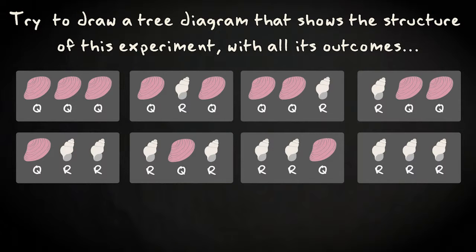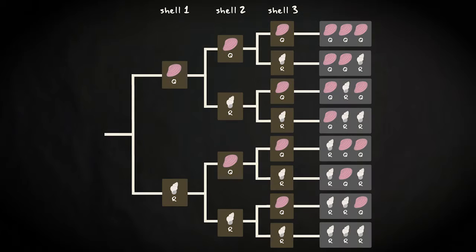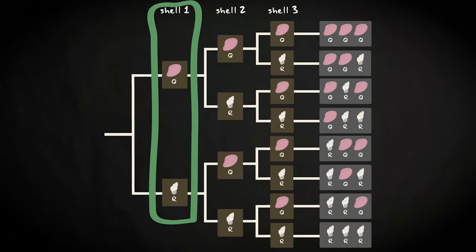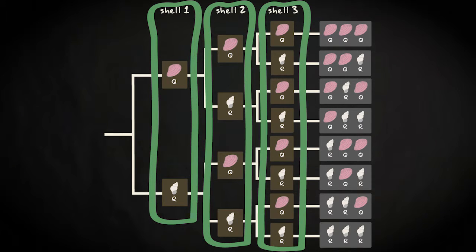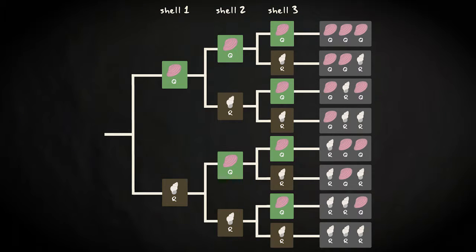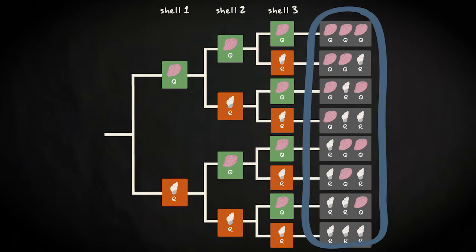Try to draw a tree diagram that shows the structure of this experiment with all its outcomes. Your tree diagram for the entire experiment should resemble this one. You have three levels of nodes — the first, the second and the third time you pick up a shell. At each node, you have one branch which represents picking up a Q shell and one for an R shell. At the end of the branches, the final outcomes are listed.